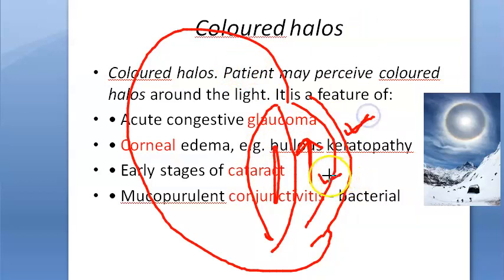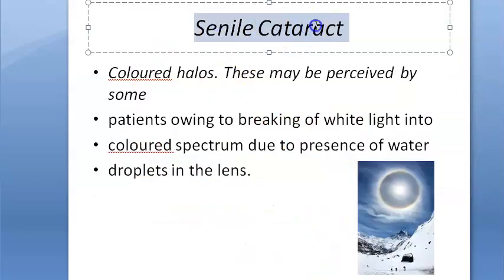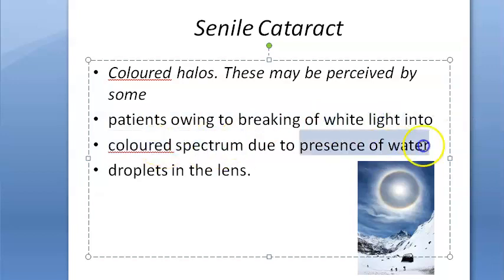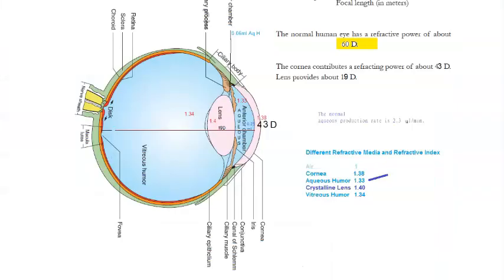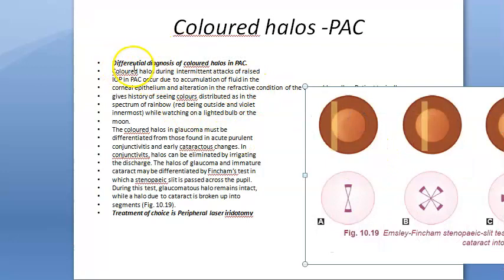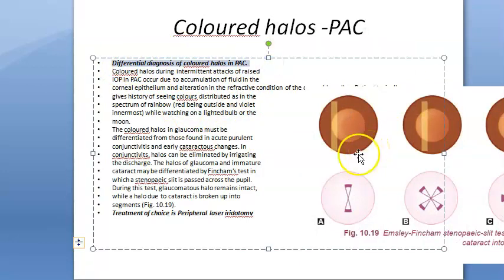Conditions where colored halos appear include mucopurulent conjunctivitis, corneal edema, acute congestive glaucoma, and early stages of senile cataract. In senile cataract, the patient sees a breakup of white light into a colored spectrum because of the presence of water droplets in the lens. These water droplets in the early stages of cataract cause splitting of light.